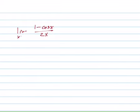Alright, let's find the limit as x goes to 0 of 1 minus cosine x over 2x.